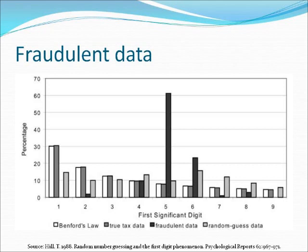However, fraudulent tax data does not follow Binford's law because some numbers are intentionally produced. Random guess data also does not follow Binford's law because some numbers are used repeatedly. In this graph, the digit five peaks in the fraudulent tax data, indicating that the actual proportion exceeds the Binford's law predicted proportion. That means that an abnormal level of duplication for the first digit is created at the digit five.